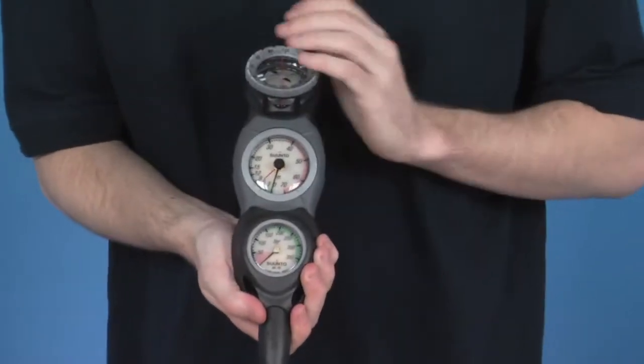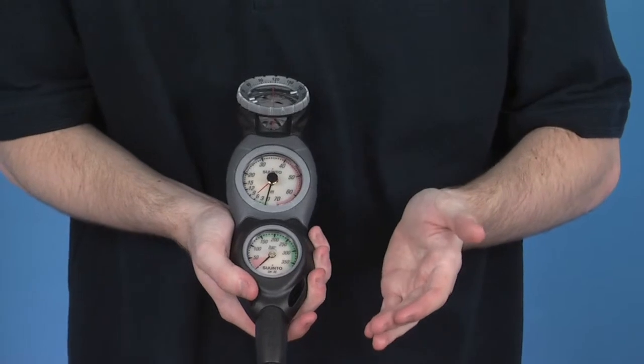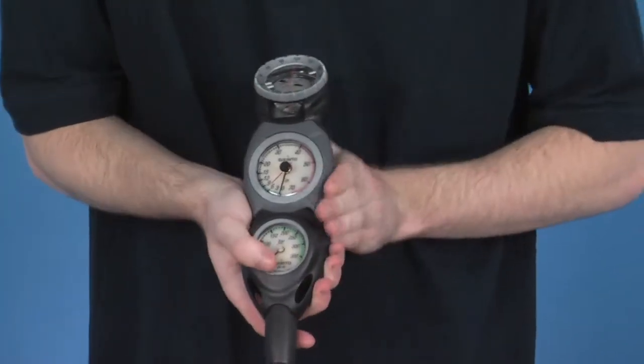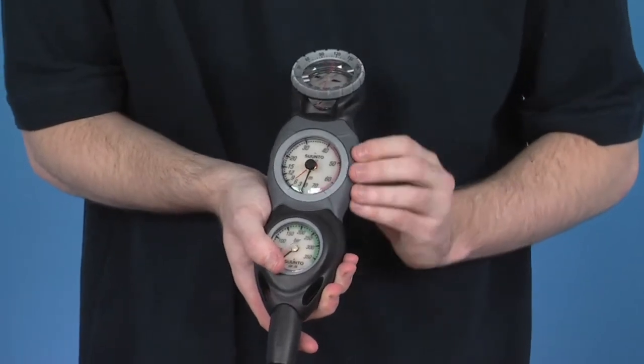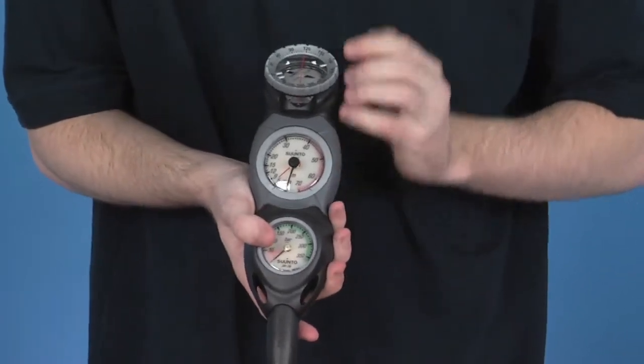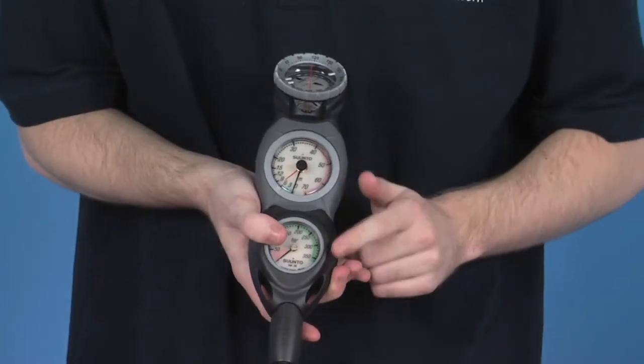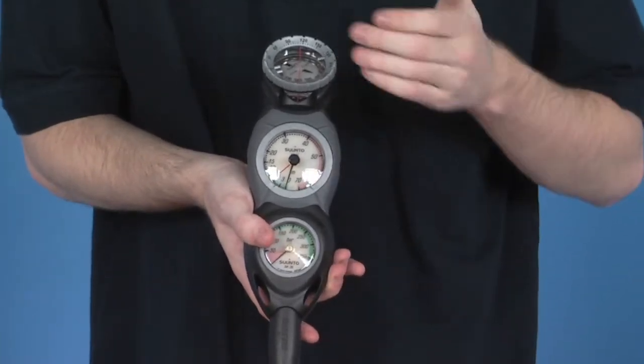What I really like about this product is it's made by a top quality manufacturer. It's really robust, lightweight, and compact, made with durable, hard-wearing, and long-lasting materials. It's a 3-in-line console: pressure gauge, depth gauge, and compass.